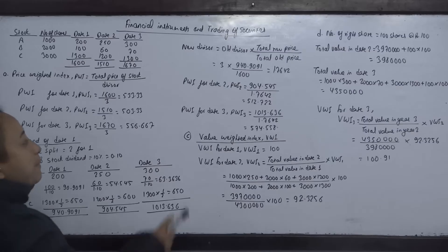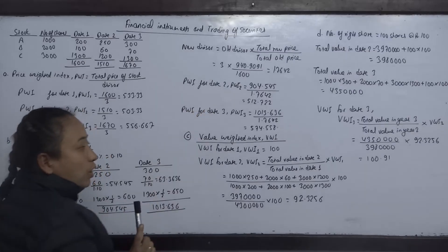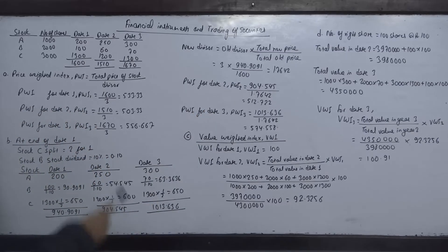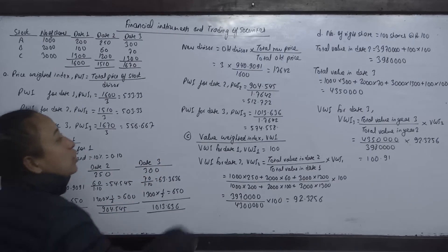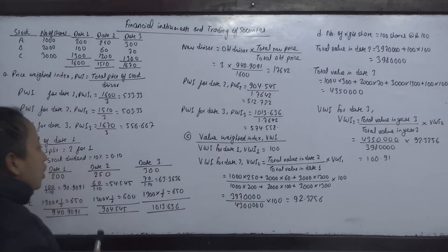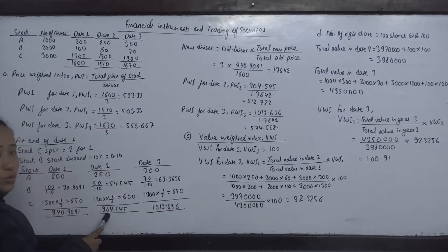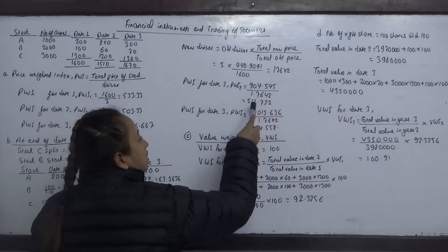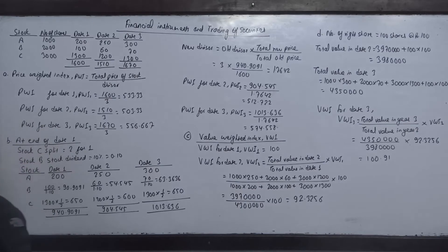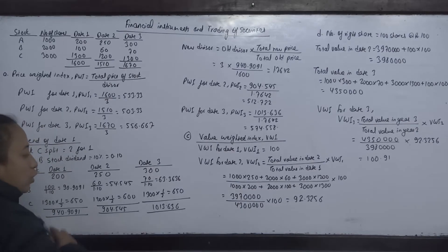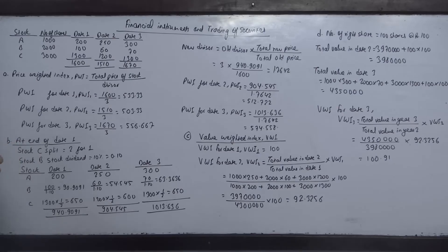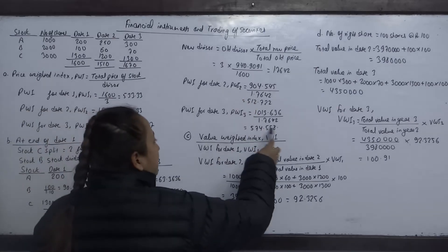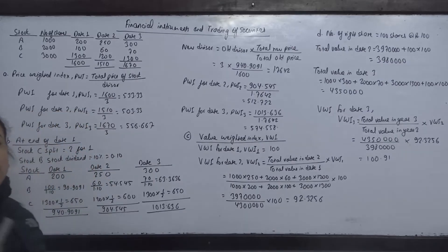Now, the price-weighted index for Date 2 is calculated using the total price of stocks on Date 2 divided by the new divisor of 1.7642. The total price on Date 2 is 1,013.636, and dividing by the new divisor gives a price-weighted index of approximately 574.558.